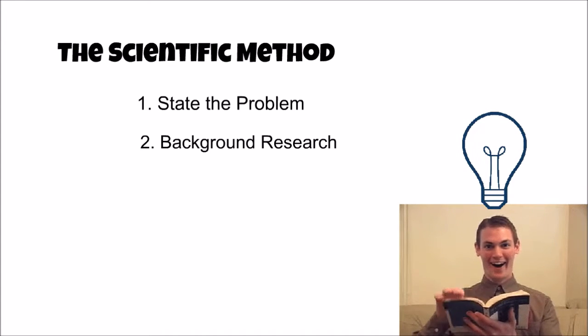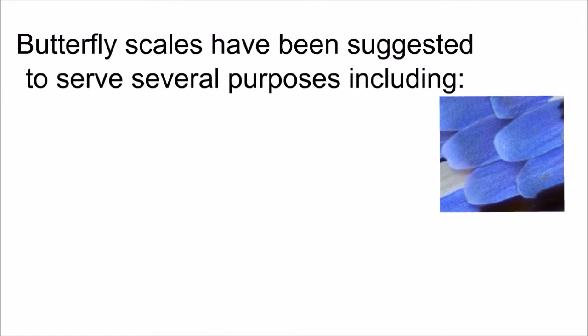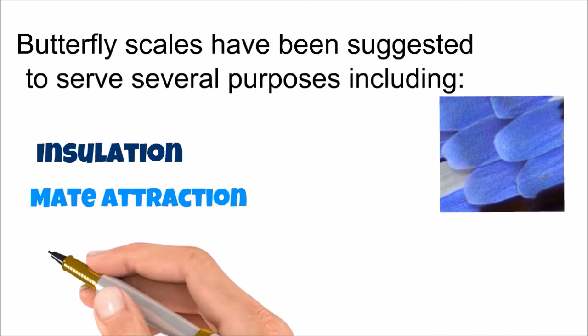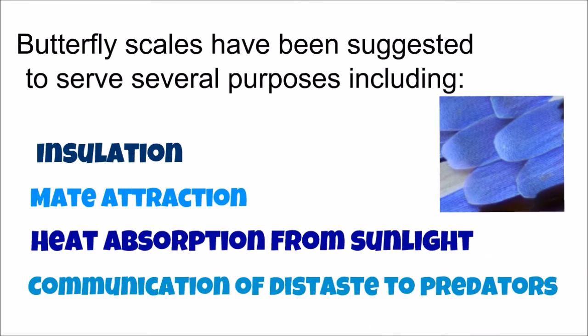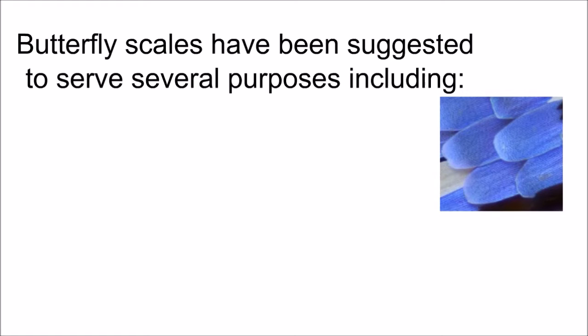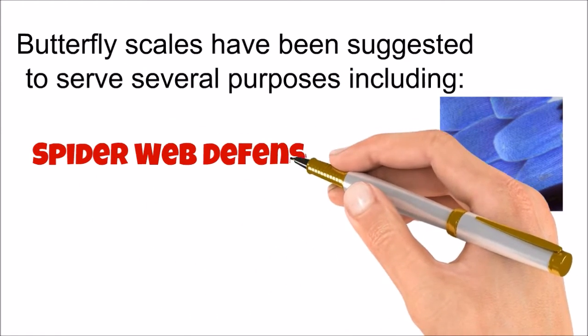the scientists will make a hypothesis based on their understanding of the problem. Butterfly scales have been suggested to serve several purposes for butterflies, including insulation, mate attraction, heat absorption from sunlight, and communication of distaste to predators. Since butterfly wing scales can be easily rubbed off, it's logical to hypothesize that they provide some defense from sticking to a spider's web.